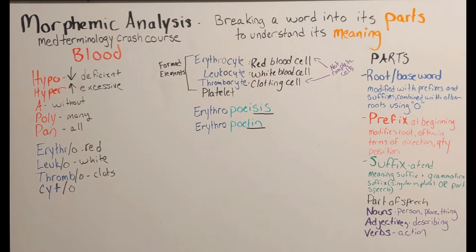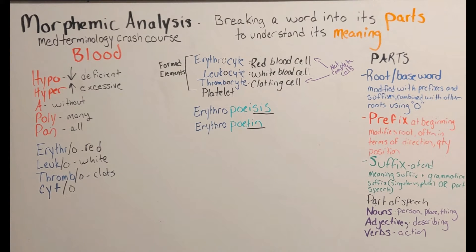Erythropoiesis is the creation of red blood cells. Erythropoietin is the hormone that triggers the formation of red blood cells. The suffixes -tin and -sis are both nouns, but -sis refers to a process, while -tin often indicates a hormone or a protein.